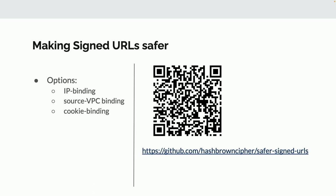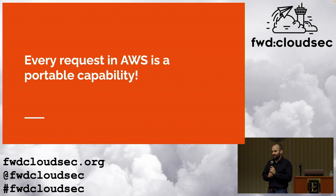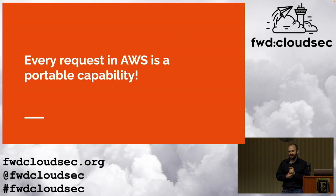If you're trying to talk to someone making that concerned face, there are ways to make signed URLs safer. Data perimeters — the IP binding and source VPC binding that many data perimeters use — would be effective here. There are also solutions based on cookie binding. In general, you have to get comfortable with the idea that the thing with the authority to do something is going to grant that authority somewhere else in the network. The big idea of this talk: every single request in AWS is a portable capability.